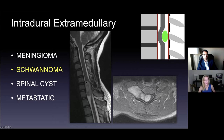This next one is a schwannoma. See how it's pushing the cord away — not expanding the cord, compressing the cord. But there is no tenting of the dura, so we know it's intradural. This is T2 hyperintense and a little heterogeneous. On the axial post-contrast, it's enhancing. Schwannomas are very slow growing and benign. It has expanded the neural foramen on this side — the nerve roots come out on each side, they attach to the cord, expanded neural foramen.